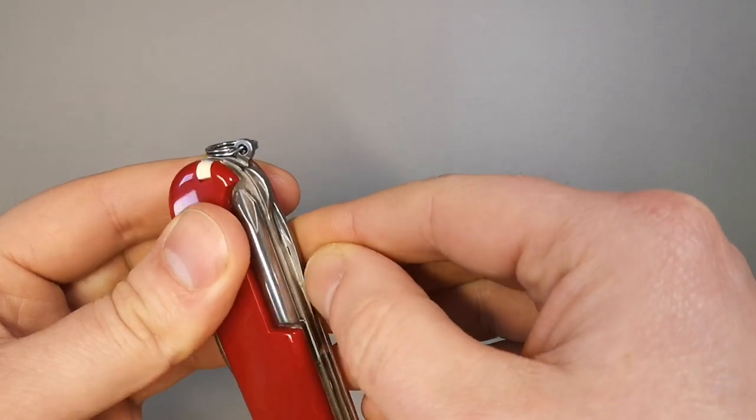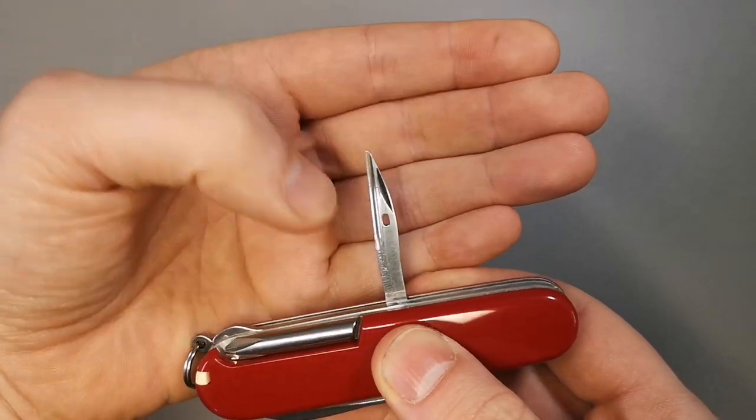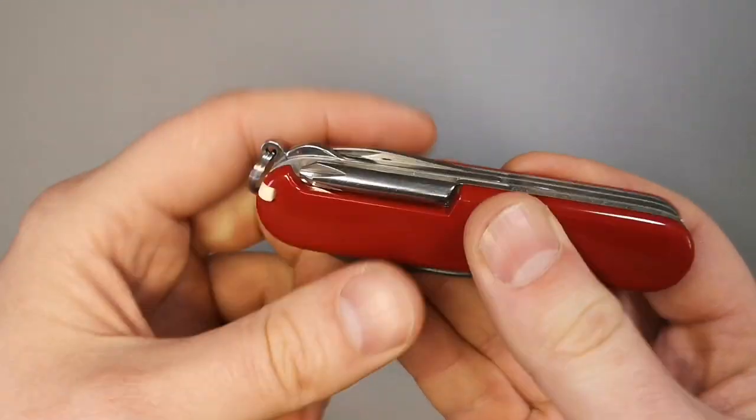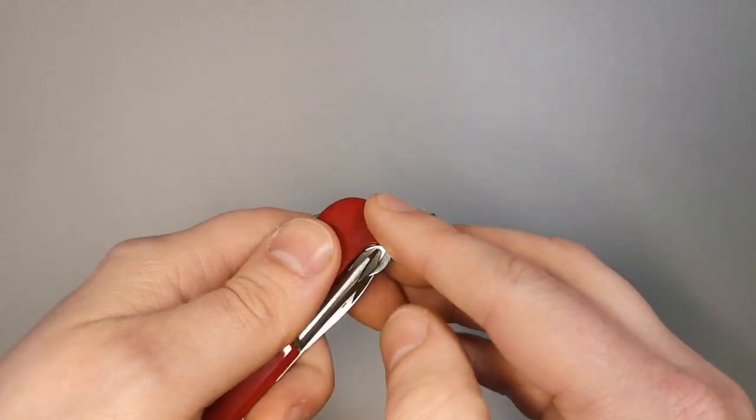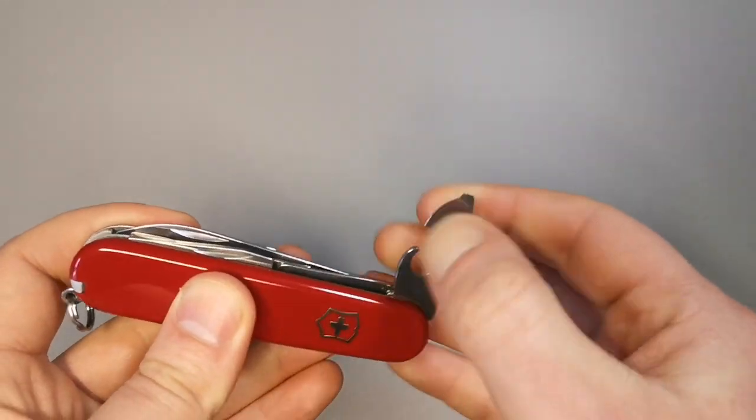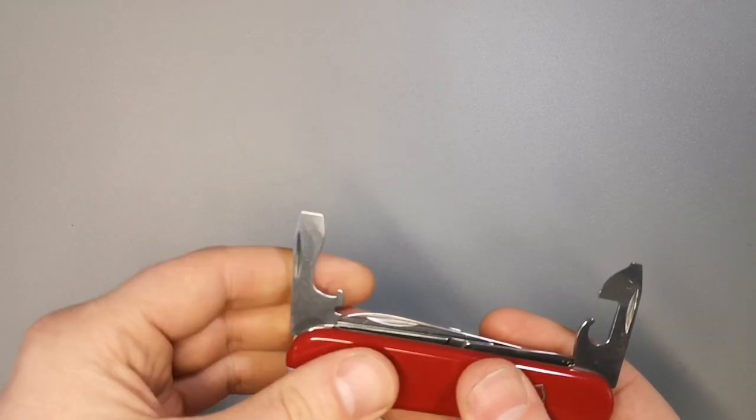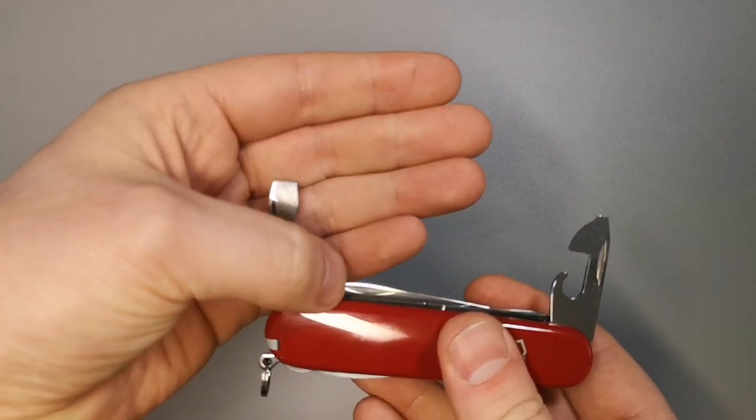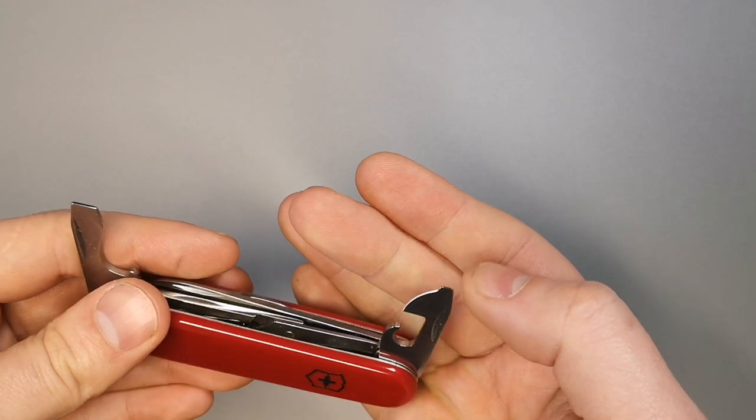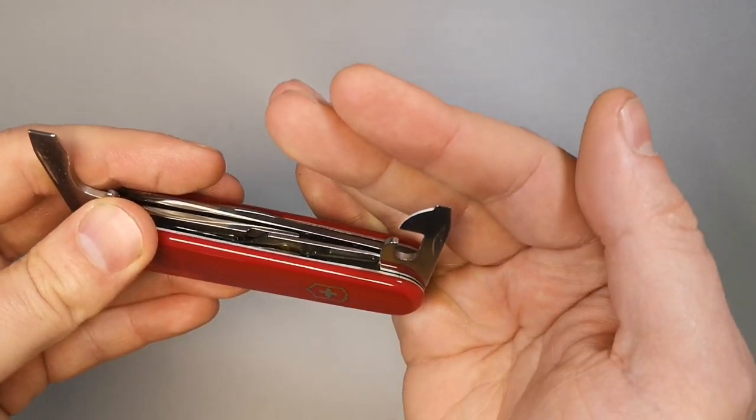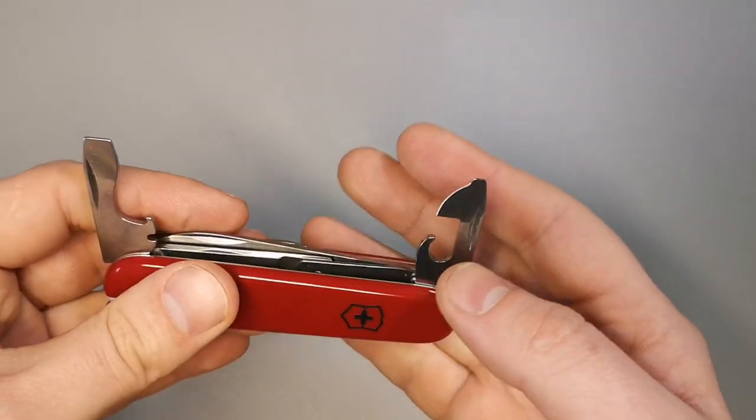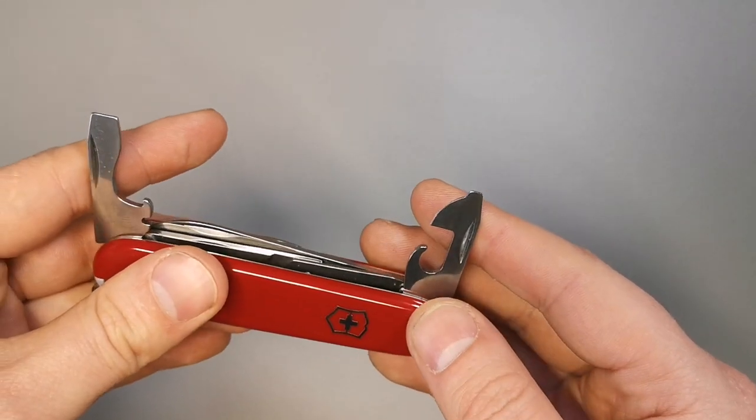And then here we have a reamer and the awl with the hole in it so you can punch through leather and do some coarse sewing. Then we have the obligatory toothpick and tweezers. And on the other side here we have a slotted screwdriver with a bottle opener and the wire stripper aperture at the bottom. And then we have here a can opener with a smaller slotted screwdriver. This can actually be used in a number two Phillips slot, but that's slightly redundant with the screwdriver on the back. And this bladed edge is always good for scraping tasks.